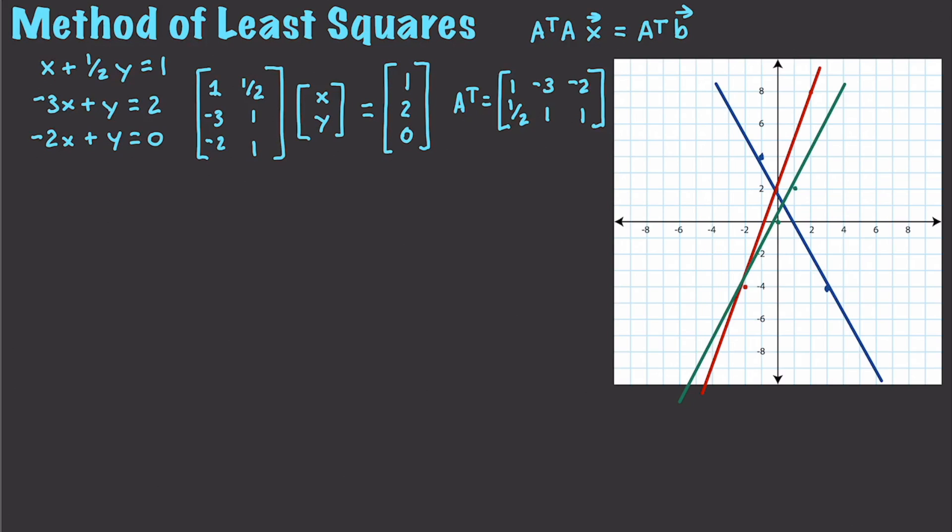Then I'm going to have to go and find A times, or A transform times A, which is going to be equal to 1, 1 half, negative 3, 1, negative 2 and 1 times A. So that will be 1, 1 half, negative 3, 1, negative 2 and 1. And if we work this out, this is going to give us a final value of 14, negative 9 over 2, negative 9 over 2 and 9 over 4.